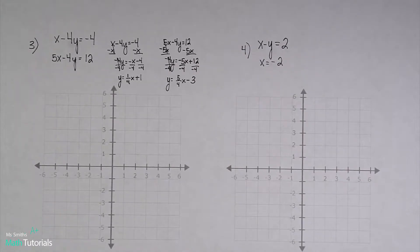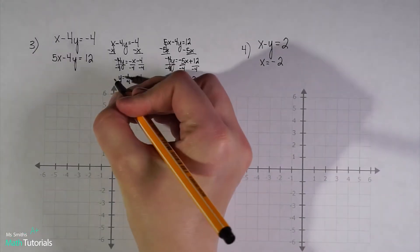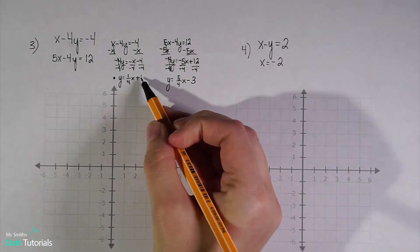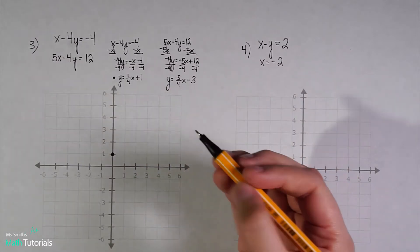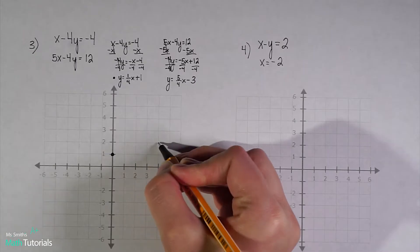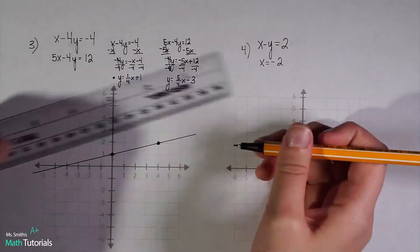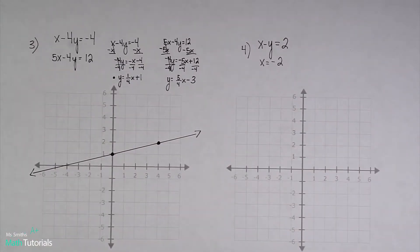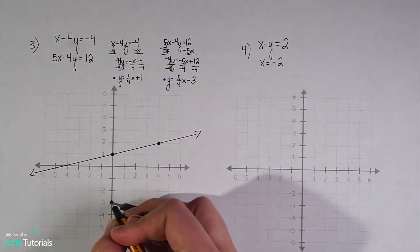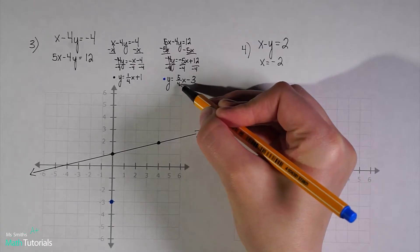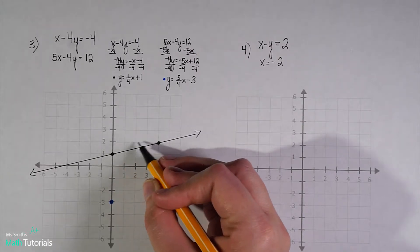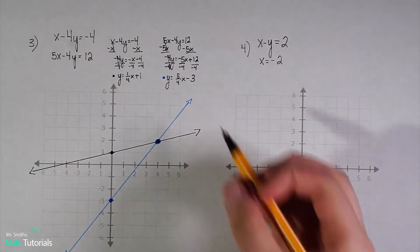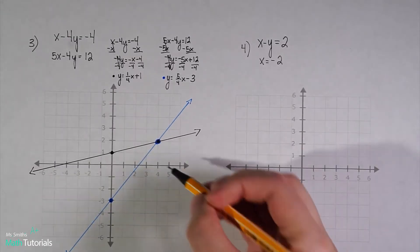I graph the first line in black with y-intercept at positive 1, and slope of up 1, right 4. Then I graph the second line in blue with y-intercept at negative 3 and slope of up 5 over 4 — up 5, right 4. I can clearly see that these two lines intersect at 4, 2. So that would be my answer.